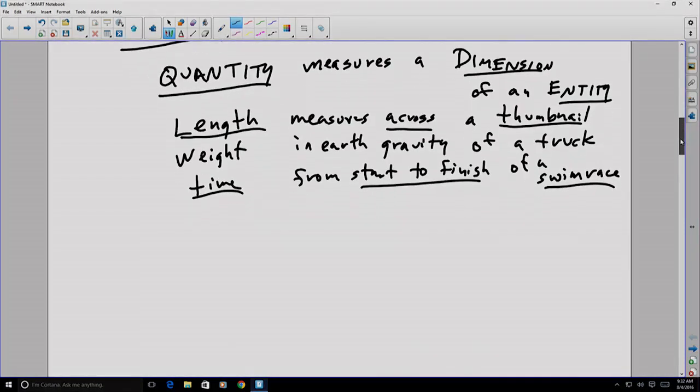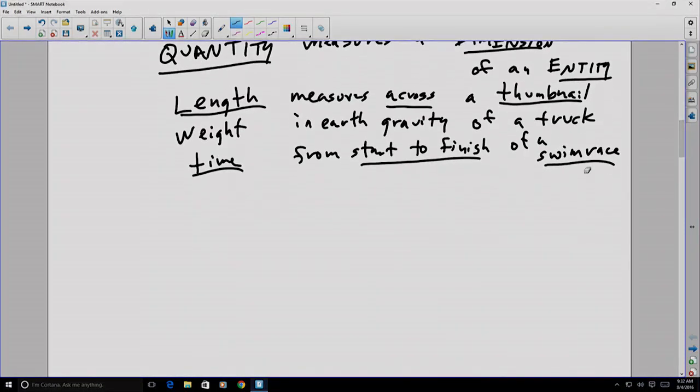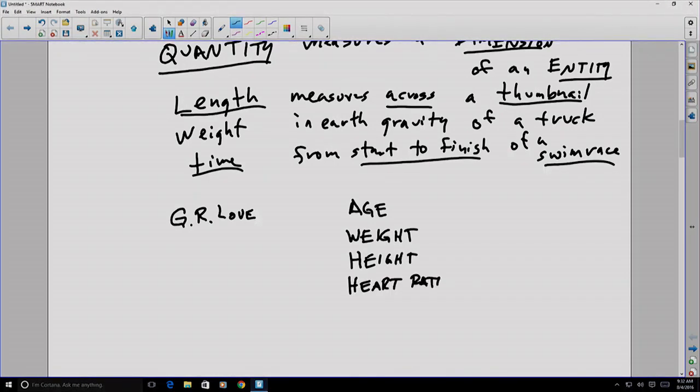Note that multiple quantities measuring different dimensions can be associated with the same entity. For example, if the entity is Dr. Love, he might have multiple quantities associated with different dimensions. For example, his age, his weight, his height, and his heart rate are all different quantities that can be assigned scalar values.